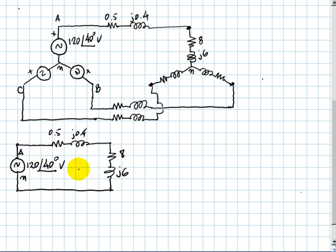We have drawn the phase A of this circuit, and in it we can compute the line current for phase A, ILA, which is just the voltage of phase A, 120 with 40 degrees, divided by the total impedance there, which is 0.5 plus j0.4 plus 8 plus j6.